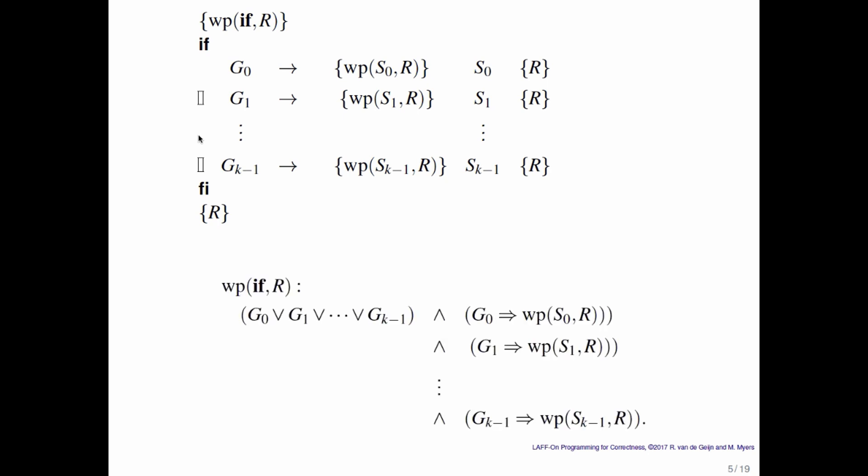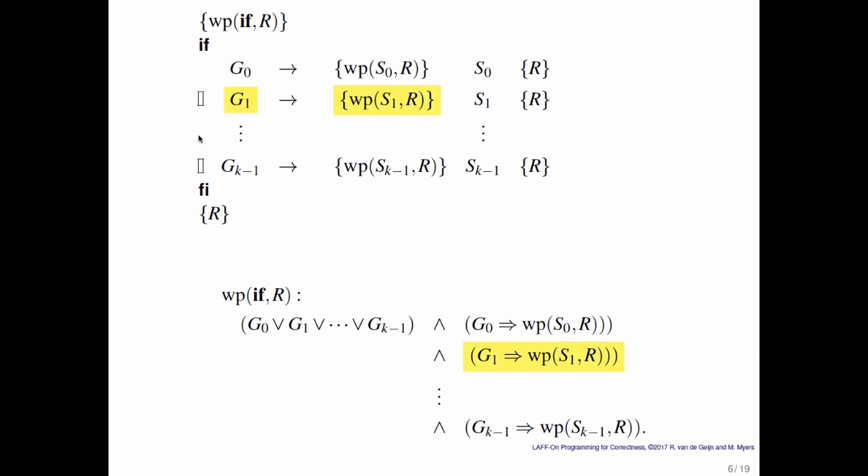First of all, one of the guards must be true. That's g0 or g1 or and so forth, all the way up to gk minus 1. And then if we look at an arbitrary guarded statement, g1 in this particular case guarding s1, then notice that if g1 is true, then we better be in a situation where the weakest precondition of s1r is true, because otherwise executing s1 will not leave us in a state where r is true. And what we have just done is justify how the weakest precondition for an if command is defined.